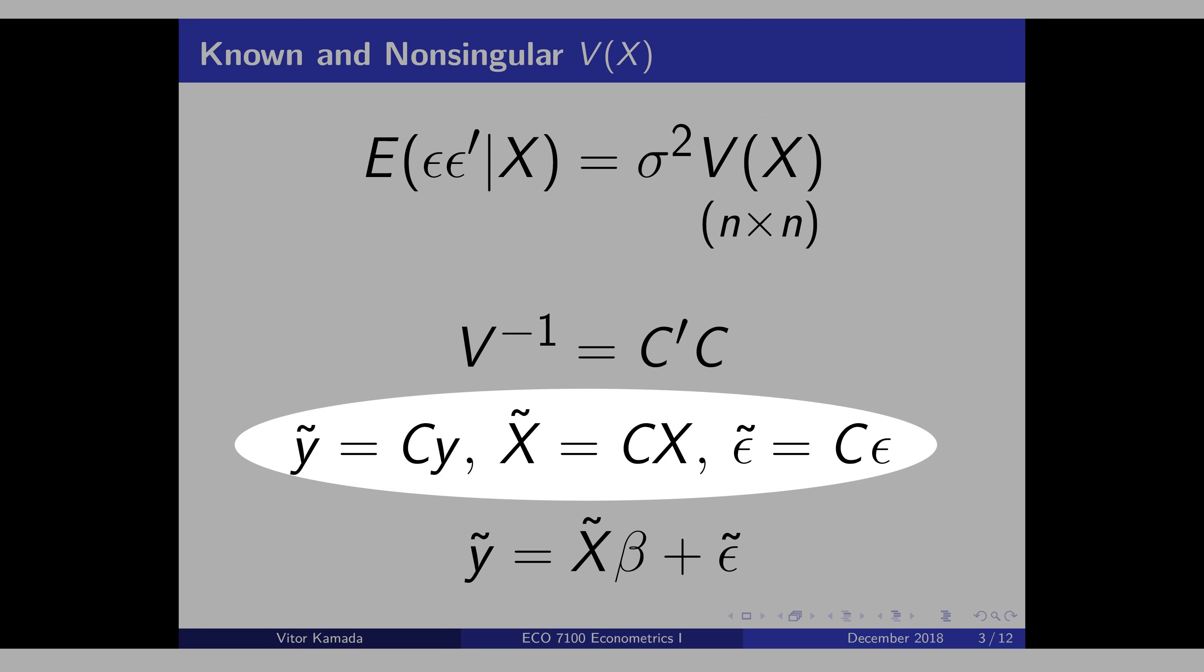GLS is just a data transformation. You take all the variables and multiply by C, and C times C gives you the inverse of V. That means the GLS removes this V(X) here.